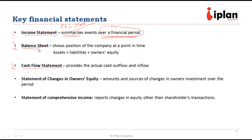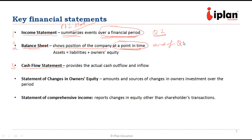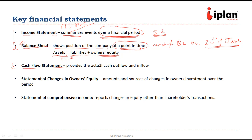The balance sheet shows the position of a company at a point in time, not for a period. So we say the balance sheet at the end of quarter 2, or on 30th June — it is at a particular point in time. It shows what the assets of the company are, what the liabilities are, and what is the owner's equity. Assets are on one side; liabilities and owner's equity are on the other side, and they have to balance. That is why we call it the balance sheet.